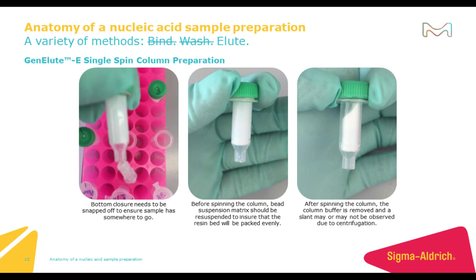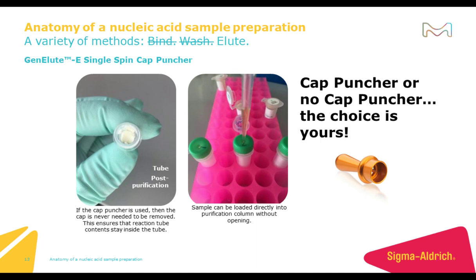Let's take a closer look at the column itself. Preparing the column for use is a simple process. A separate collection tube is used to collect the void volume from the column and can be reused since it never touches the sample. The cap should be loosened a quarter turn, or a cap punching tool can be used to prevent a vacuum from forming within the column. You need to snap off the bottom closures so the sample has a place to go, and resuspend the bead matrix by a simple vortex step so beads pack more evenly during the column preparation step. After fitting the column, the column buffer is removed and a slant may or may not be observed due to centrifugation.